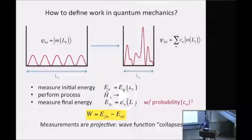At this point, you come around and you make another projective measurement of the energy at the final time. And that causes the wave function to collapse to some eigenstate of the final Hamiltonian, let's say the n-th eigenstate. The probability for this to happen is given by the usual Born rule.